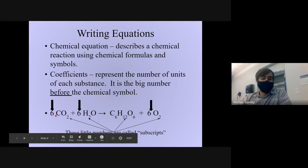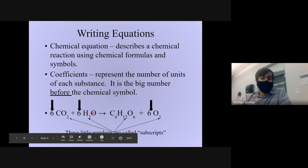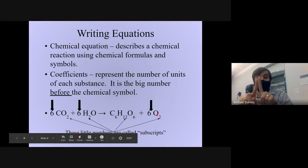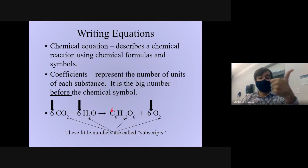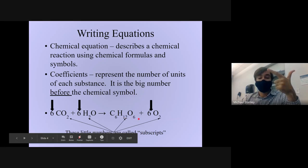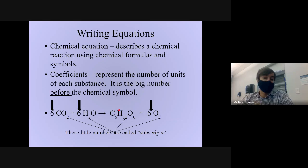These big coefficient numbers are going to be really important when it comes to balancing our chemical equation. The little numbers down here are called subscripts — they tell us in a specific molecule or compound how many of each type of atom we have. For example, the little 2 subscript in CO2 tells us we have one carbon and two oxygen atoms. A water molecule has two hydrogens and one oxygen. Our glucose molecule is made of six carbons, twelve hydrogens, and six oxygens.